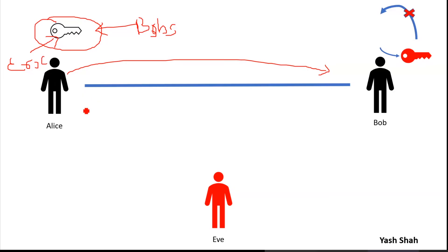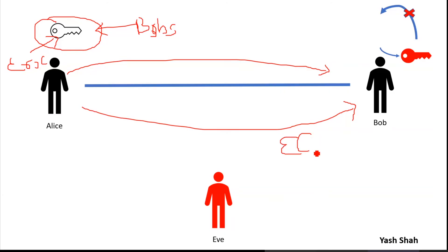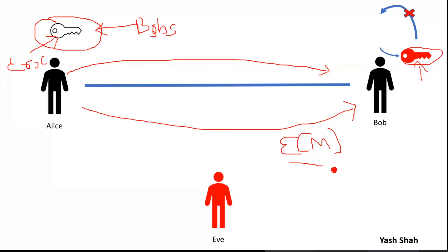The encrypted data will be sent to Bob. The encrypted message is received by Bob, and Bob can decrypt it using the private key. This private key is only with Bob, so no one other than Bob can open that particular encrypted message.